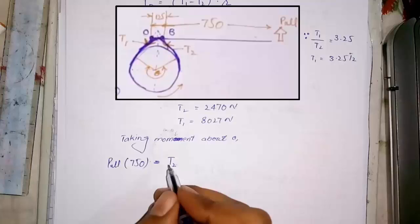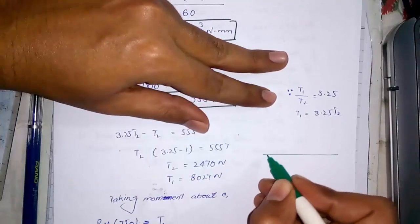Pull moment is in anti-clockwise and moment due to T2 is in clockwise direction. Let me draw the system again.